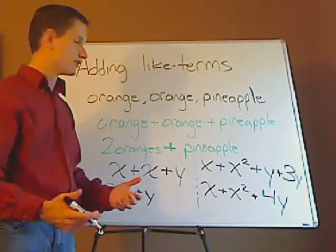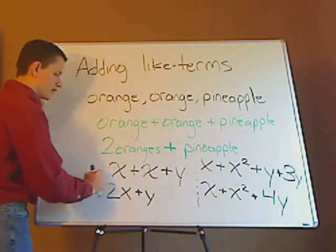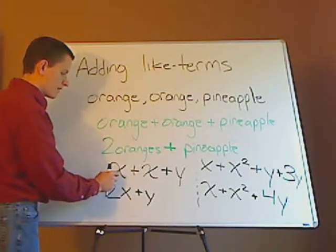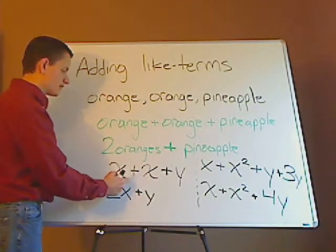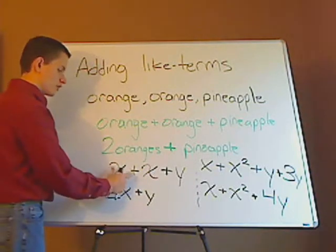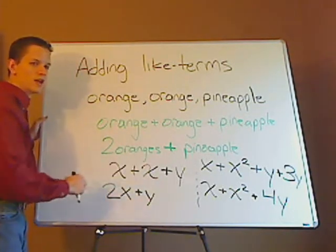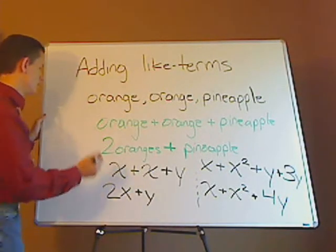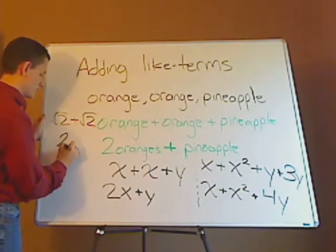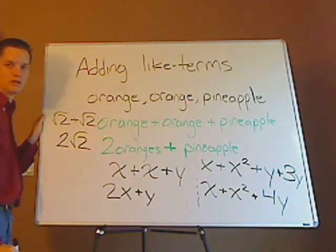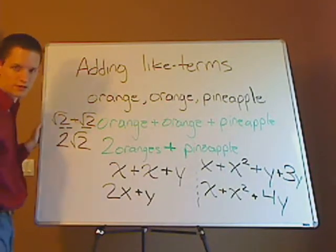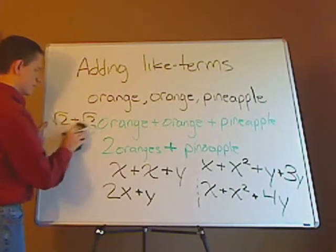Subtracting and adding like terms works the same way. When you're adding, you take the coefficients — the numbers in front of the term — and it has to be exactly the same term to combine them. You add the coefficients together. If you're subtracting, you subtract the coefficients. Coefficient simply means the number in front of the term. It could be a group of variables, or something like square root of 2 plus square root of 2 equals 2 square root of 2 — because you're just keeping the term the same. That's a little side note you might see later; don't worry about it now.